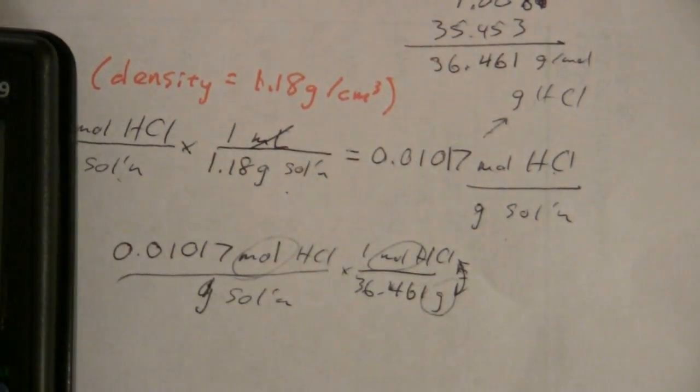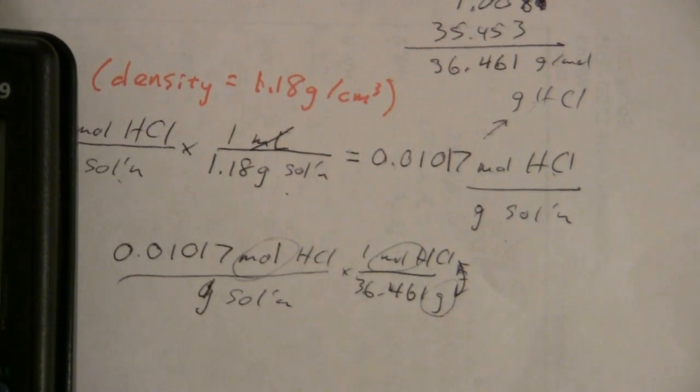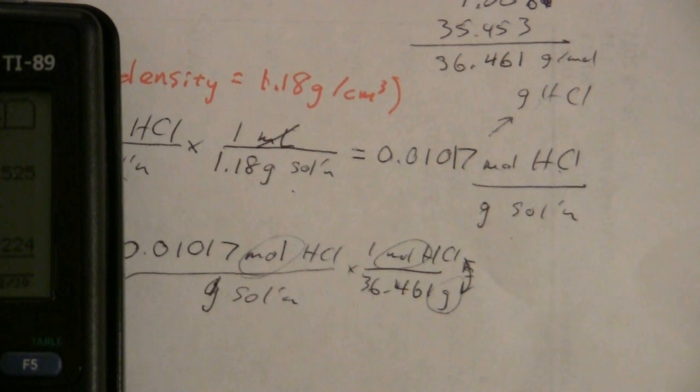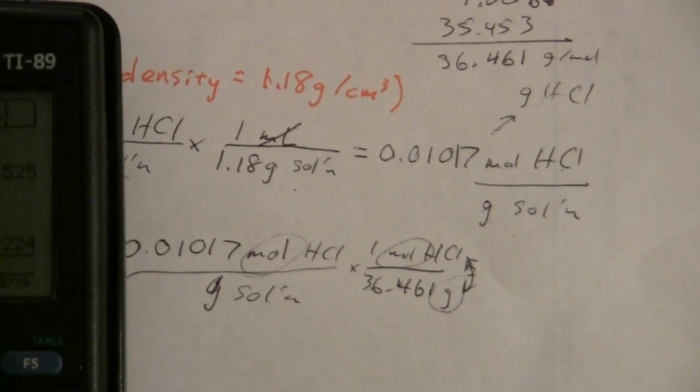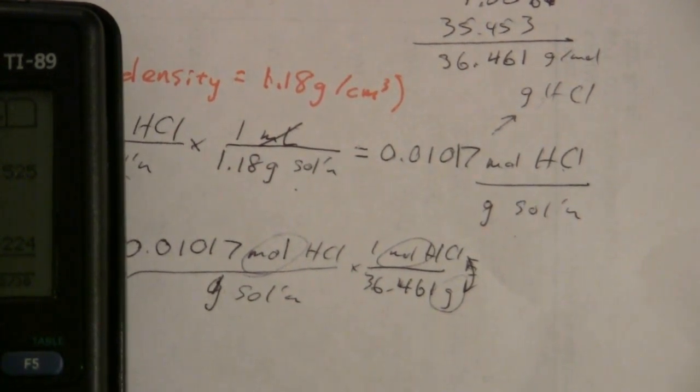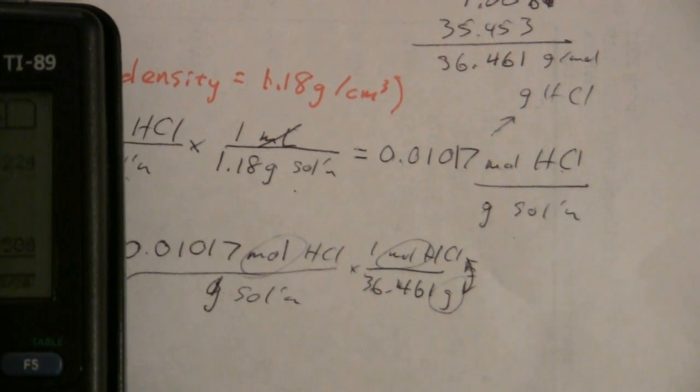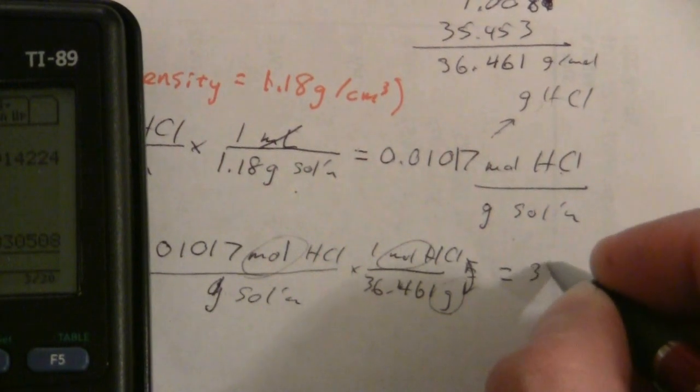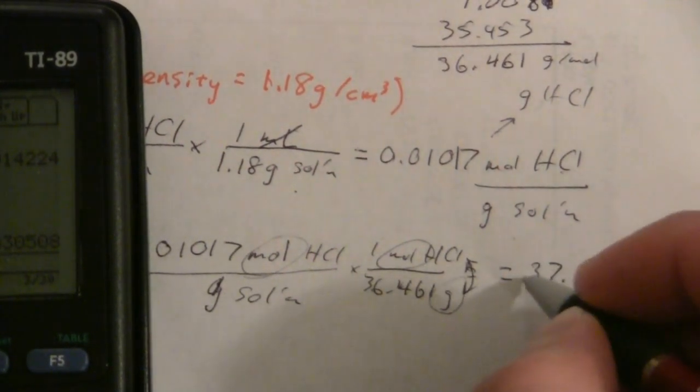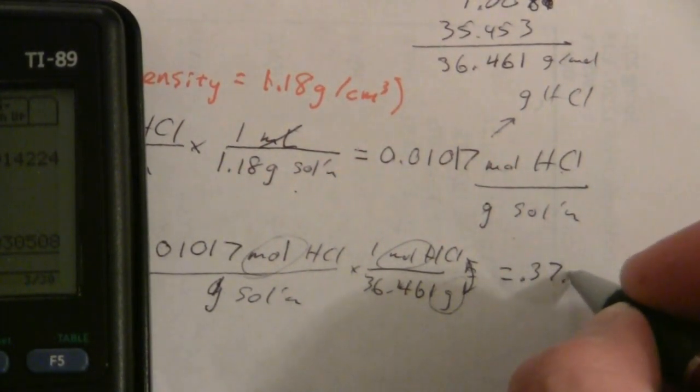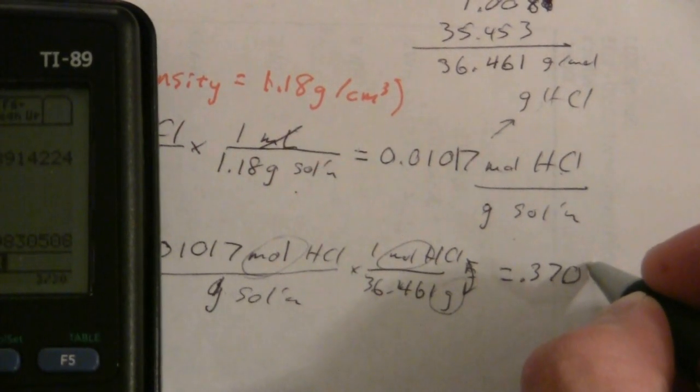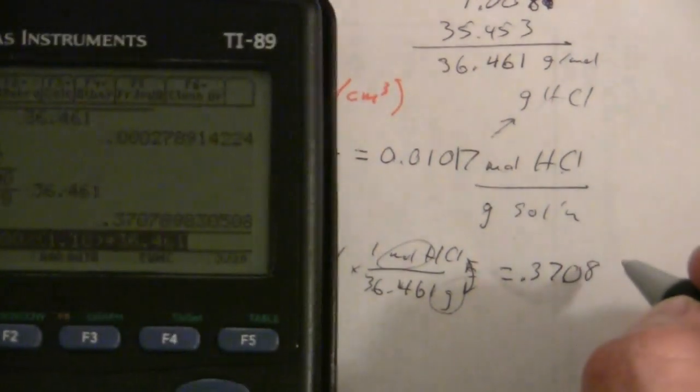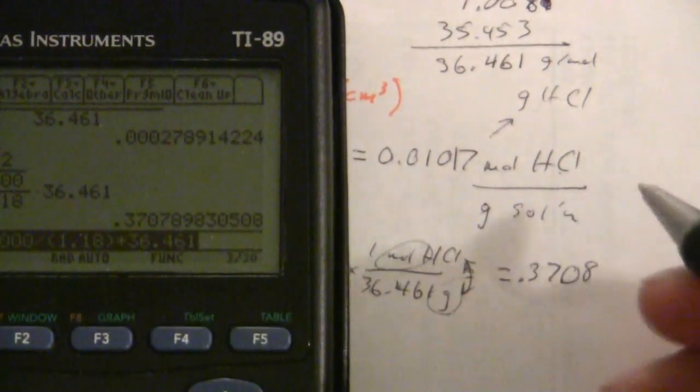All right, that's a kind of a silly mistake there. I need to multiply that not divide it. So let me do that here, times 36.461, and now what I get is 0.3708.